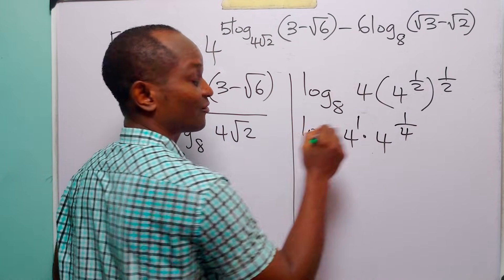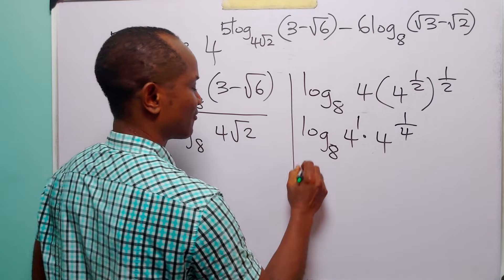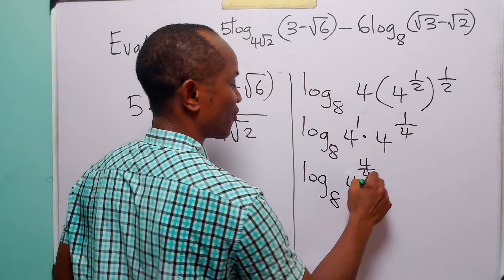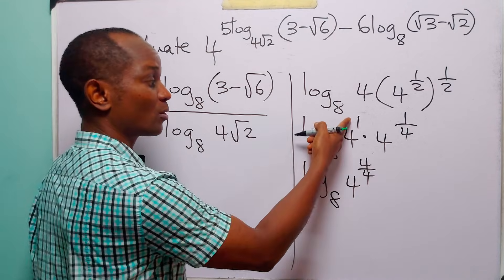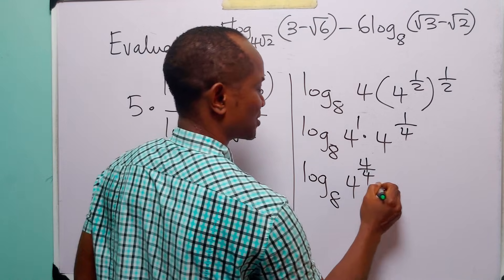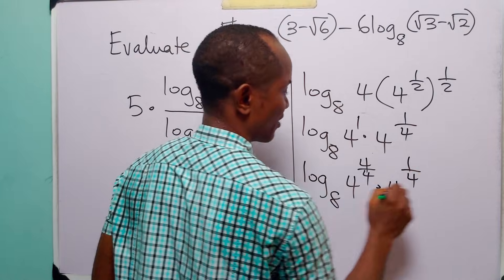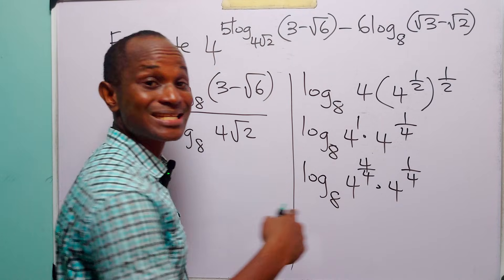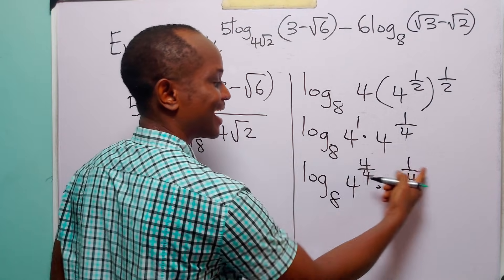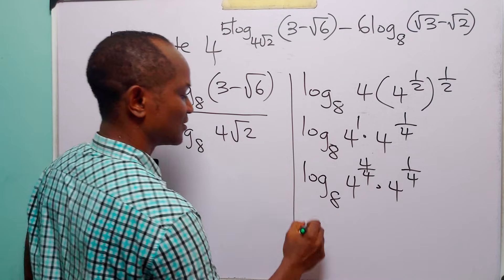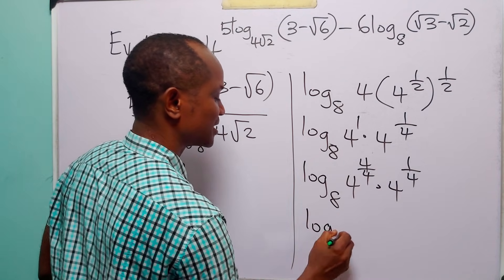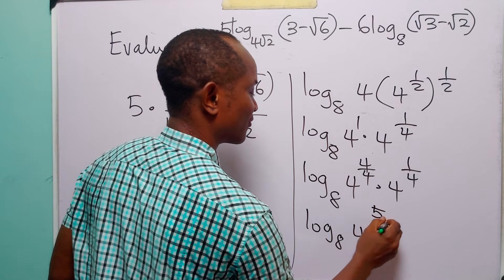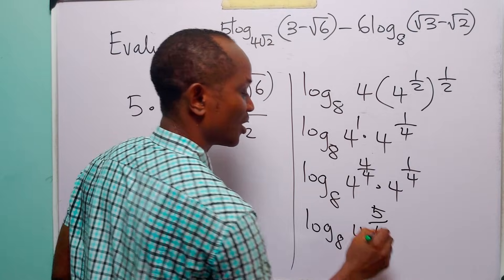You know that this is 4 to the power 1, so we can write this as log to base 8 of 4 to the power 4 over 4. Since 4 over 4 equals 1, multiplied by 4 to the power 1 over 4. When we multiply two numbers with the same base, we add their exponents. So this is log to base 8 of 4 to the power 5 over 4.